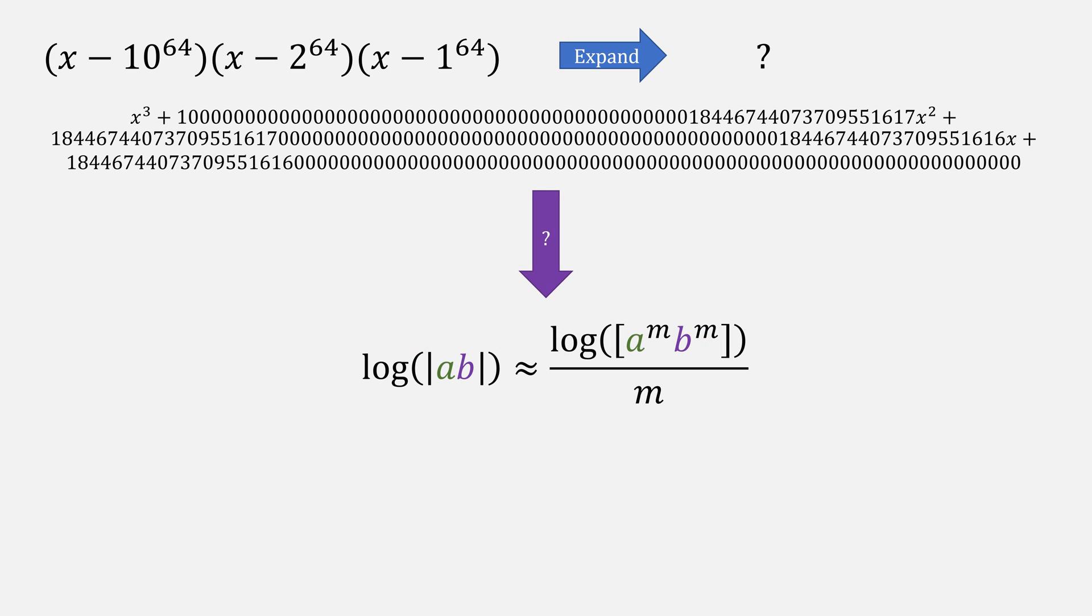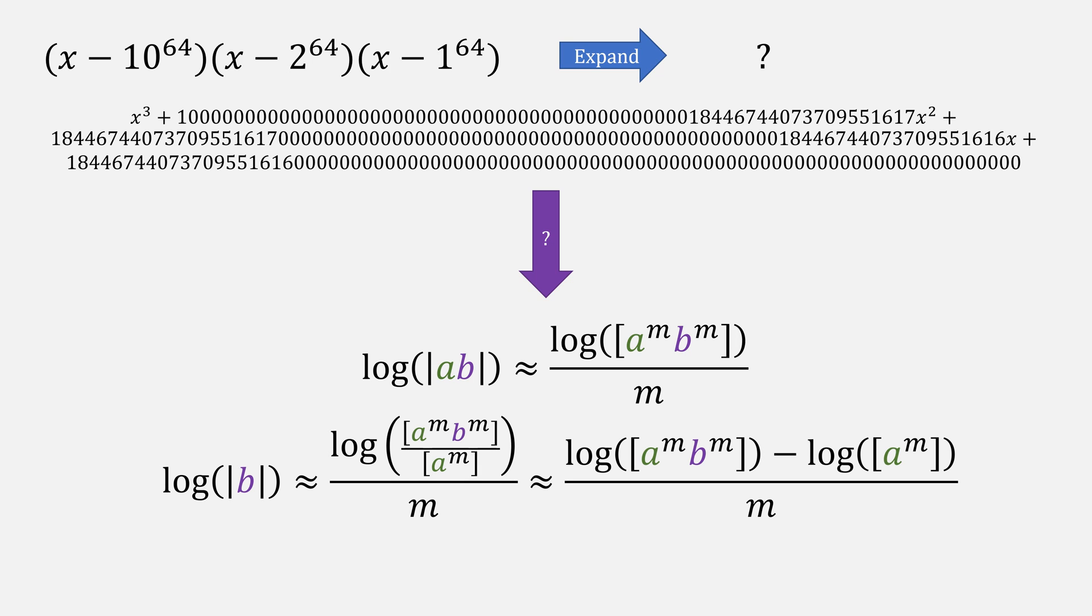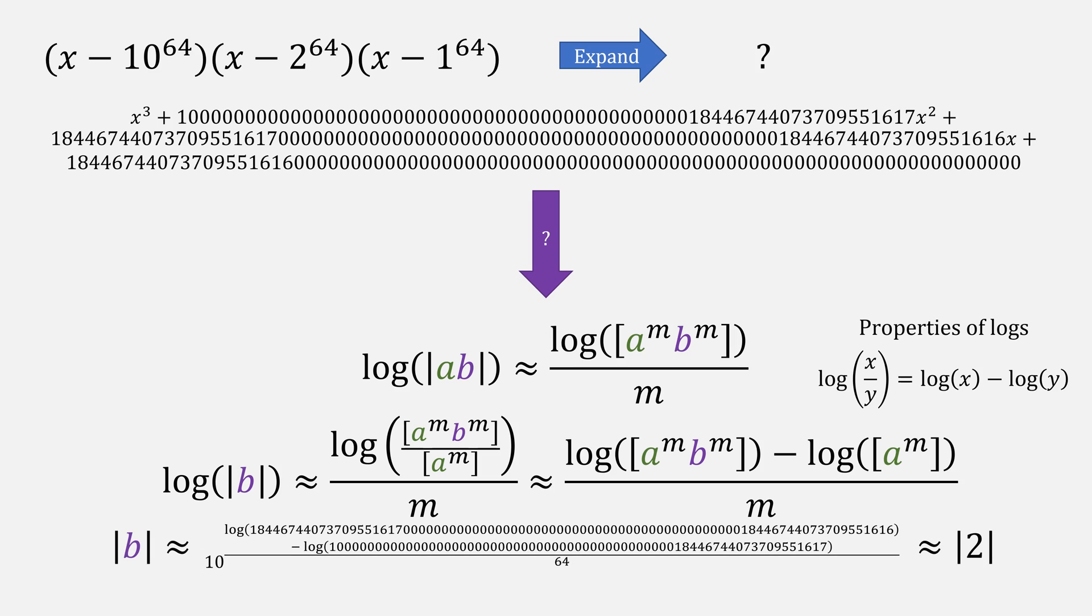Once we've found a we can then solve for b using our approximation from earlier. We can divide out a^m from [a^m b^m] in our bracket notation. Using another property of logs we can turn that division into subtraction to make our life easier. Then raise to a power like we did before and we get that the absolute value of b is 2.